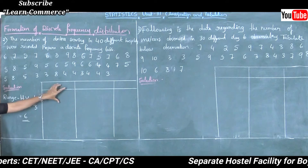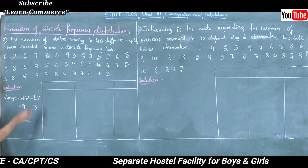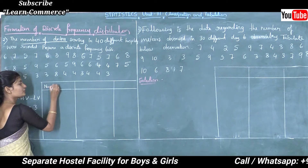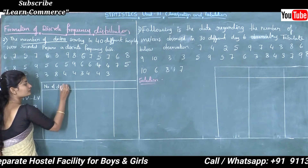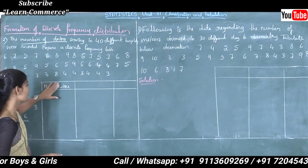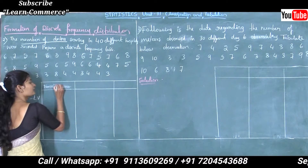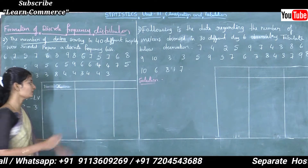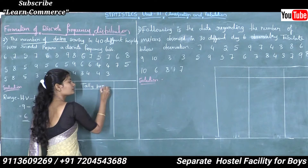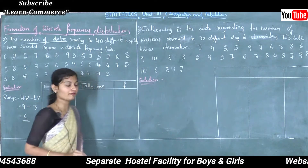The first column is variable. Here the variable is 'number of doctors', and variable is denoted by X, so here I will write X. The second column is tally marks. The last column is frequency, and frequency is denoted by F, so here I will write F.